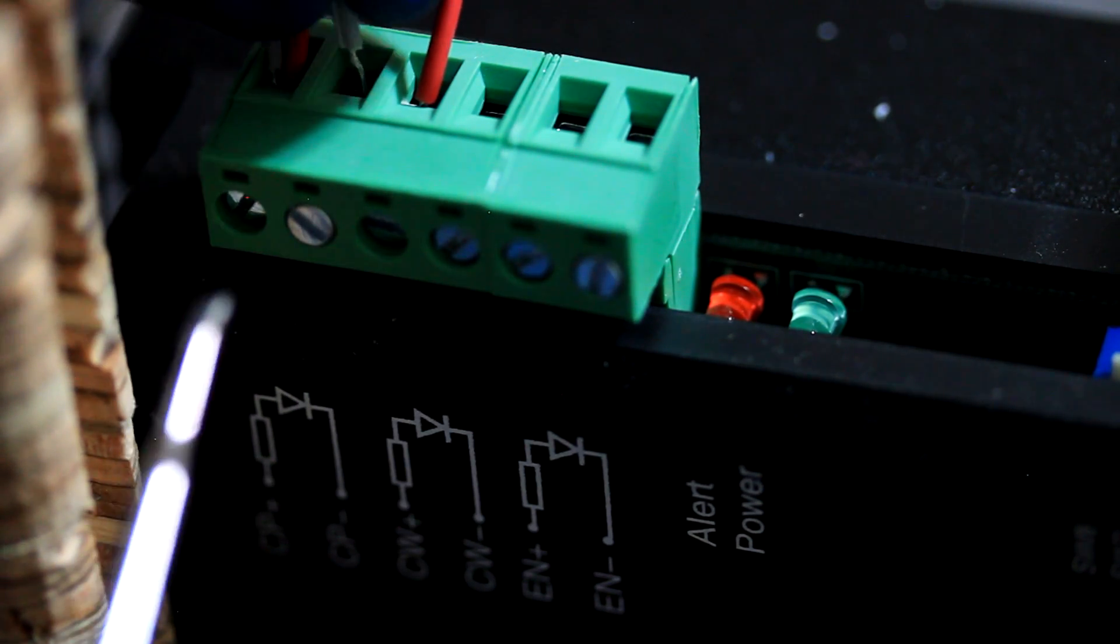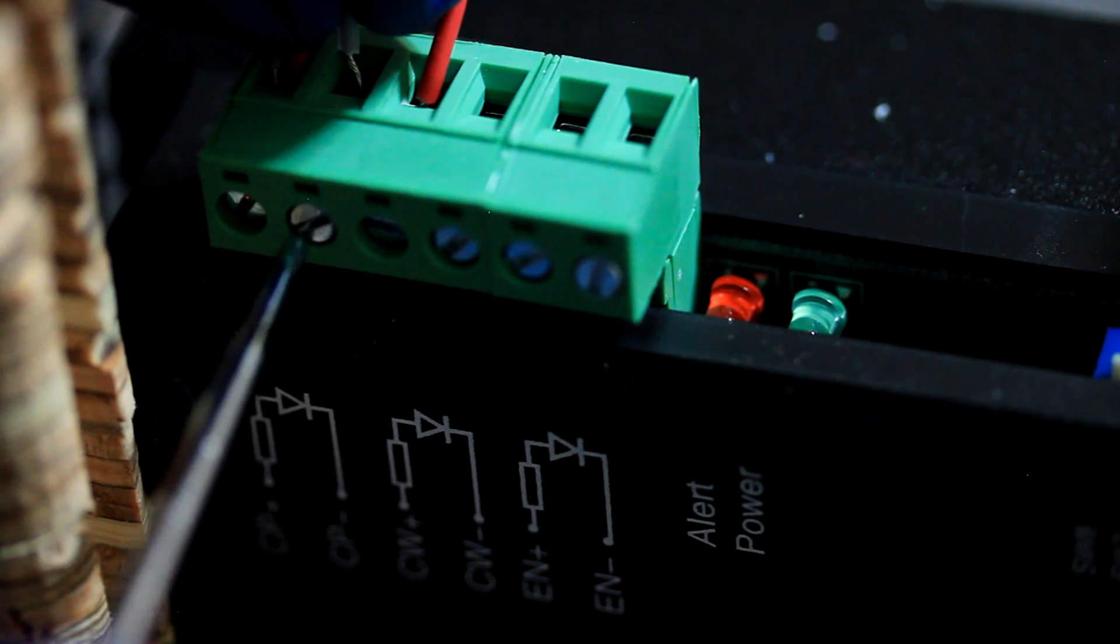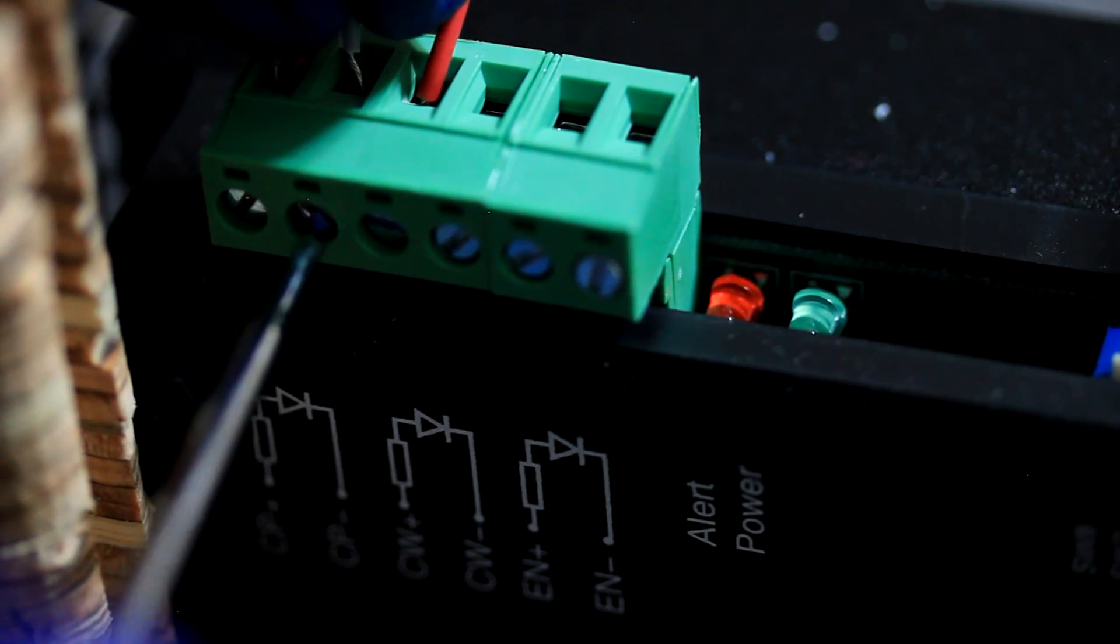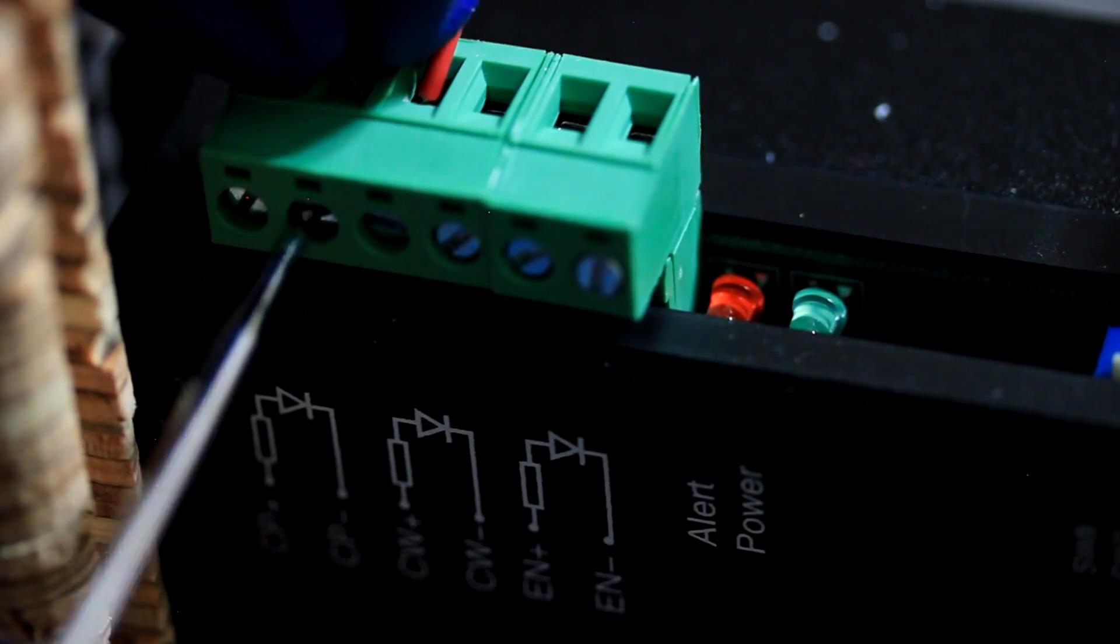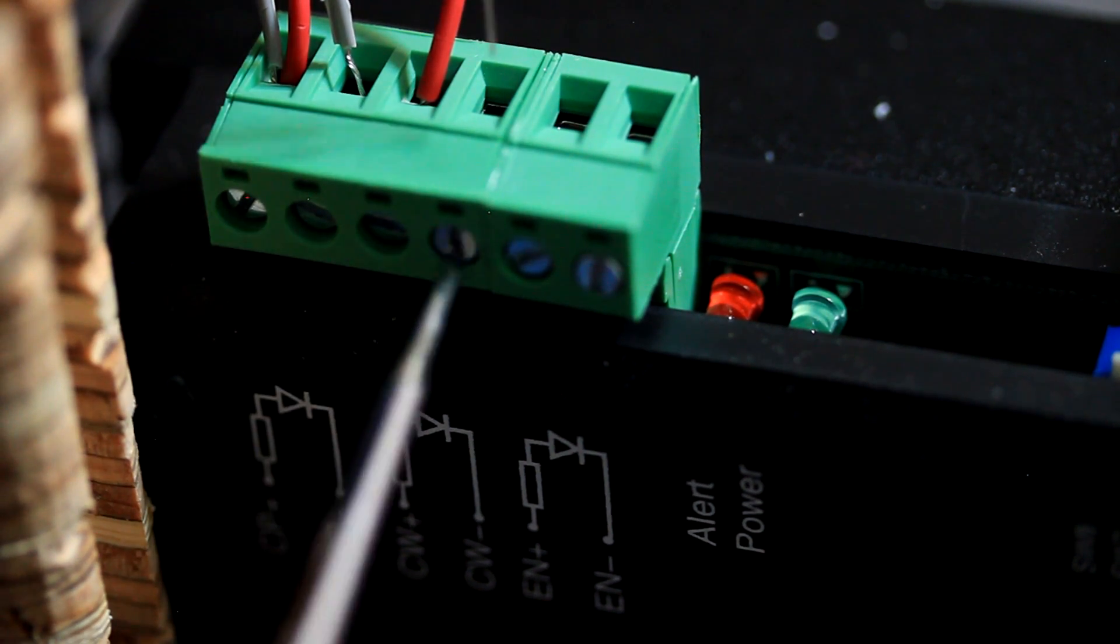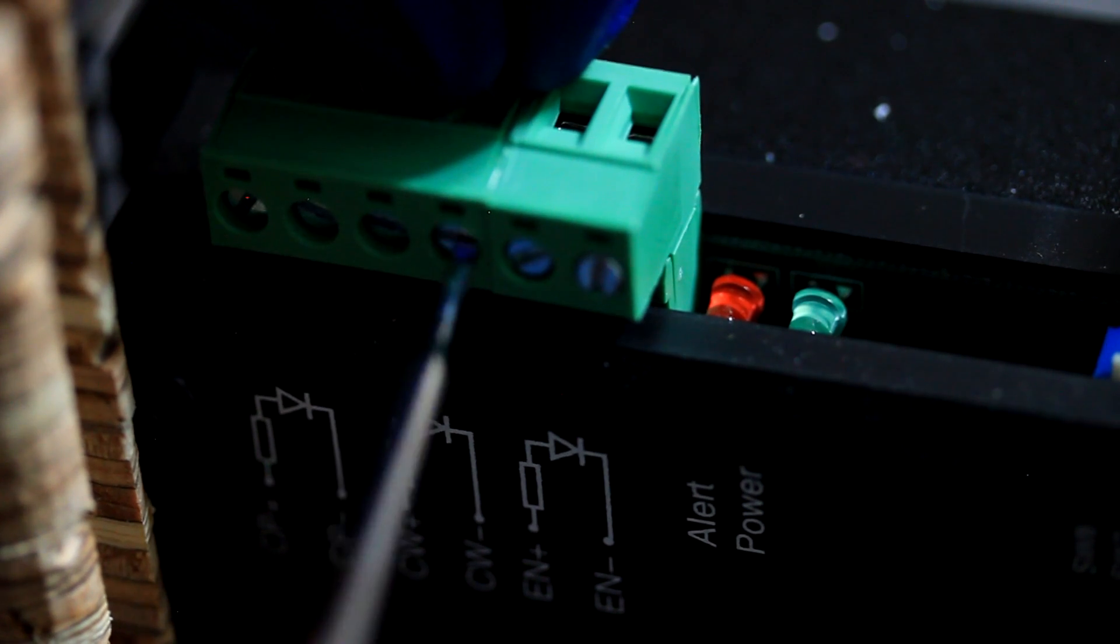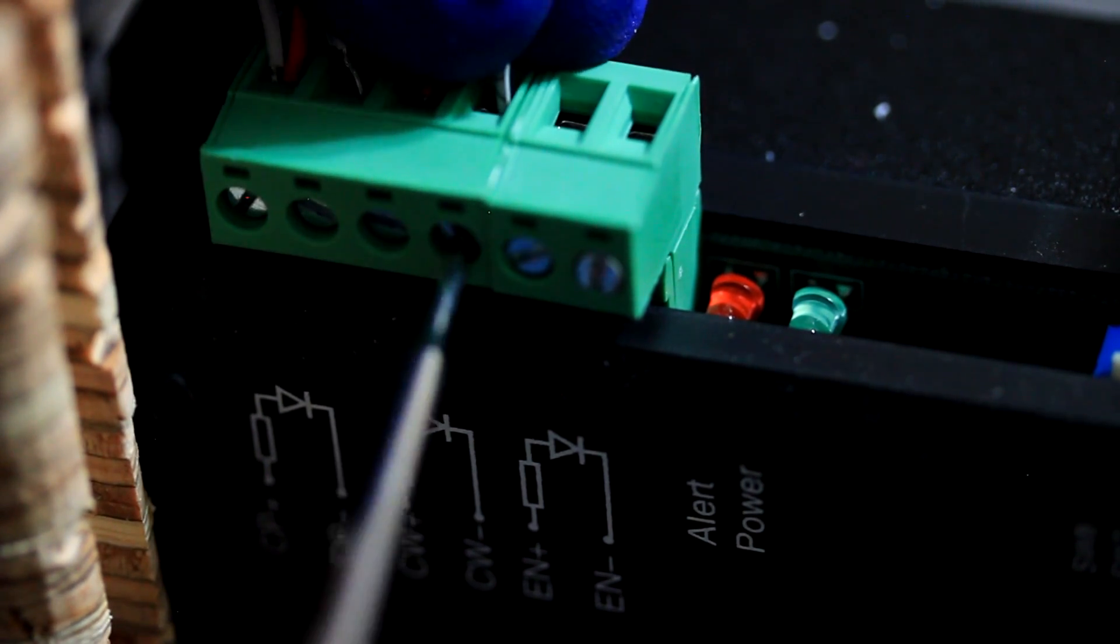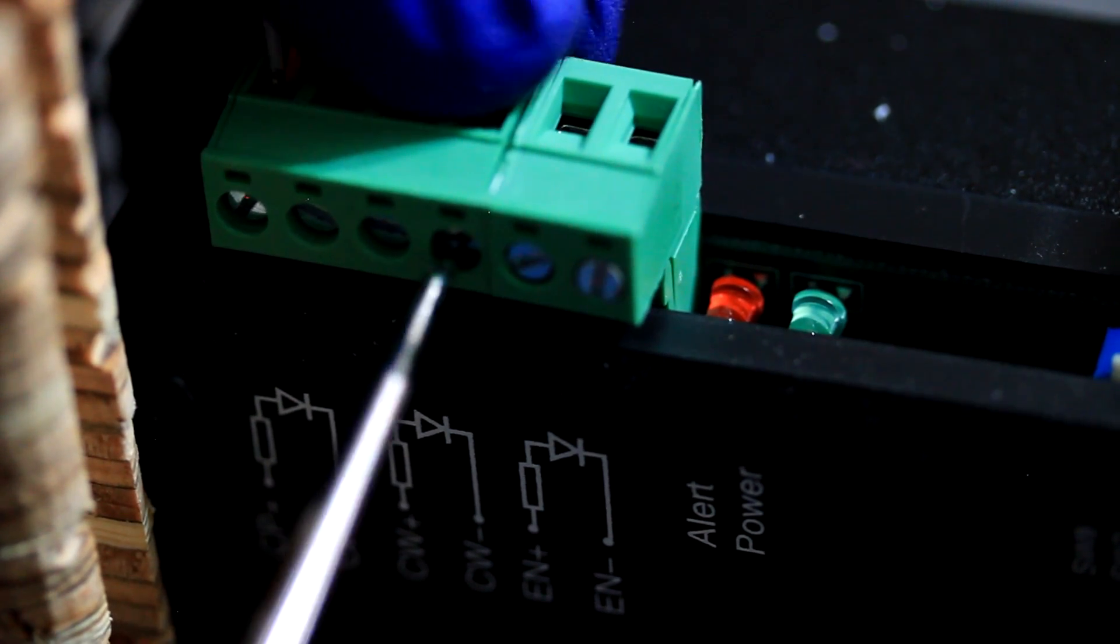Now add the pin or wire number 5 to the CP minus which is the pulse terminal. Tighten and ensure that it's a secure connection by tugging on it. Now secure the number 3 wire to the CW minus terminal which is the direction signal terminal. Tighten the terminal and confirm it's a secure connection.